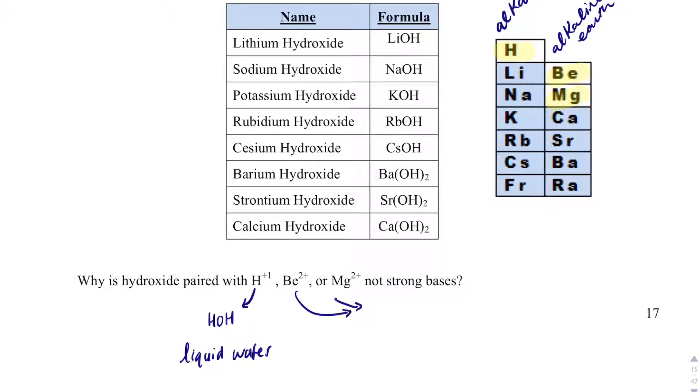And then if I have beryllium hydroxide or magnesium hydroxide, those are not very soluble in water, which means that they don't produce a whole bunch of hydroxide, which means, yes, they're bases, but they're not very, very strong bases.